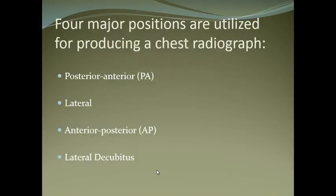Regarding positions: in the PA (posterior-anterior) view, the X-ray beam comes from behind and the cassette is in front of the chest. We ask the patient to open the scapulae, touch the cassette with the chest wall, put the chin on the chin rest, so that everything is straight and the optimal position is acquired.